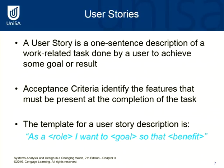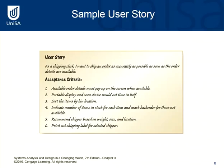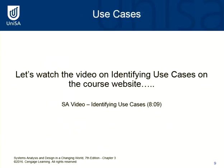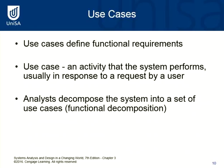A user story is a one-sentence description of a work-related task done by a user to achieve some goal or result. We gather user stories from users to establish what work-related tasks are done. We also specify acceptance criteria that identify features that should be present once that task is completed. The template is: as a [role] I want to [do something] so that [something occurs]. For example: as a shipping clerk, I want to ship an order as accurately as possible as soon as order details are available.